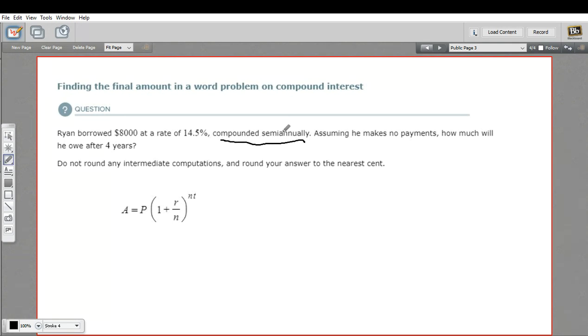Well, what does that mean? Semi-annually, that means two times per year. So they're actually calculating the interest and charging it twice in a year. This is a way to earn a little bit more interest if you're the person who's offering the loan.